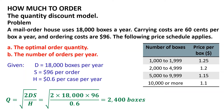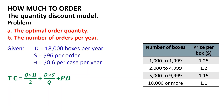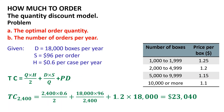The next step is to calculate the total cost corresponding to Q = 2,400. At this quantity the unit price is $1.20 per box, as 2,400 falls in the range of 2,000 to 4,999 boxes. Using TC equals Q multiplied by H divided by 2, plus D multiplied by S divided by Q, plus P multiplied by D: TC at Q = 2,400 equals 2,400 multiplied by 0.6 divided by 2, plus 18,000 multiplied by 96 divided by 2,400, plus 1.2 multiplied by 18,000, which equals $23,040.